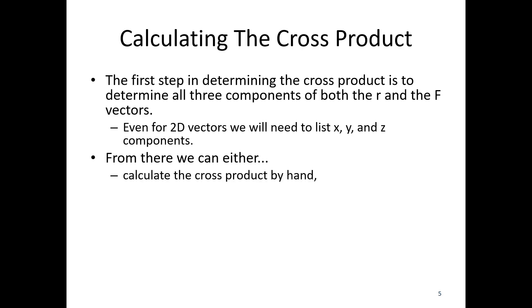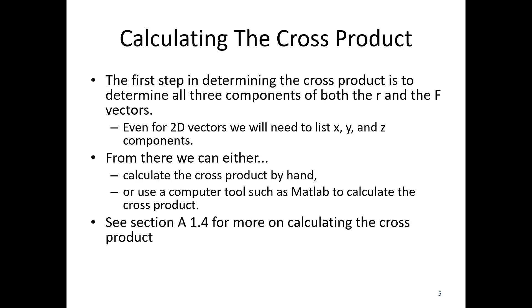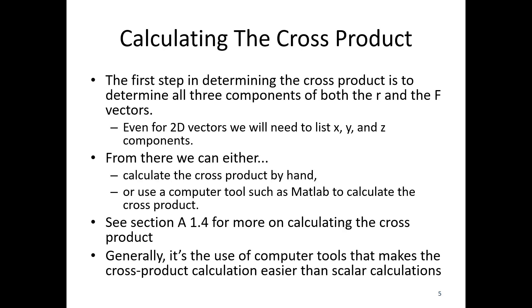From there, we can either calculate the cross product by hand, or we can use a computer tool such as MATLAB or Wolfram Alpha to calculate the cross product for us. You can see appendix section 1.4 for more on calculating the cross product by hand or with either of those tools. Generally, it's the use of computer tools that makes the cross product calculation easier than scalar calculations. We're doing the cross product to save ourselves some time, so we might as well use a computer tool.